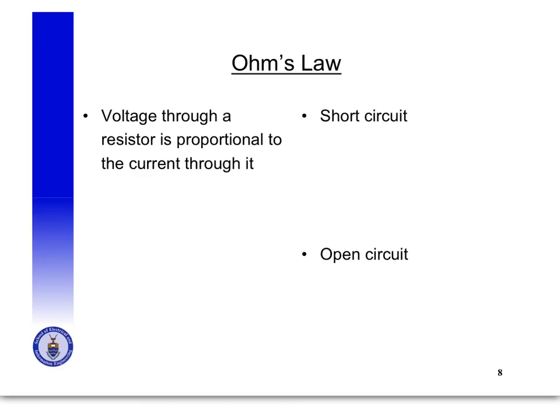Next we get to Ohm's law. Ohm's law is the most basic thing you need to know, and everything we are going to learn in circuits builds on it. Ohm's law states that the voltage across a resistor is proportional to the current through it, assuming ideal resistors whose resistivity doesn't change with temperature. So V is equal to IR — that is the statement of Ohm's law.